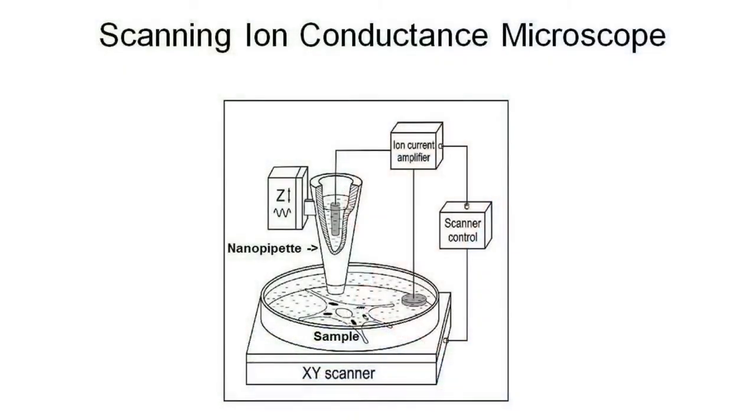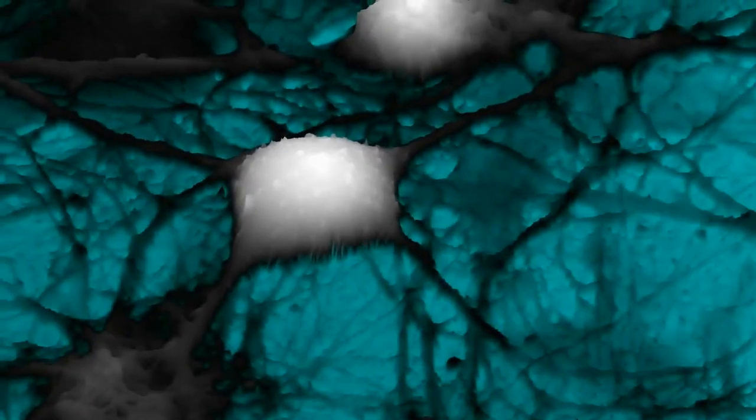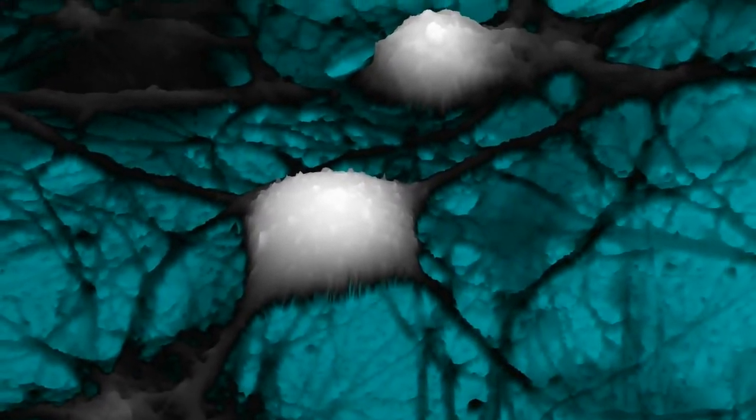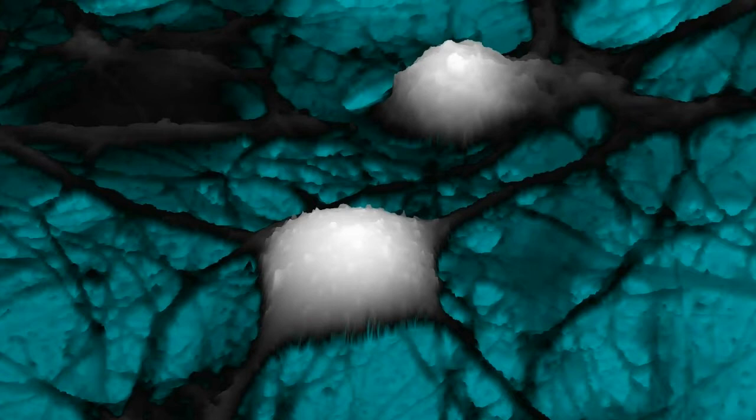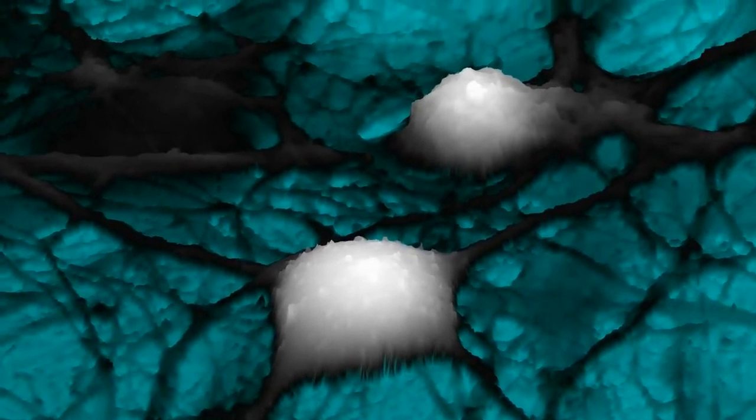As soon as we move the pipette in a raster scan around the sample, the position of the tip could be recorded and 3D topography will be generated. Even very complicated neuronal networks could be imaged in physiological buffer with nanoscale resolution.